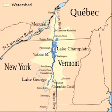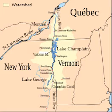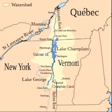The New York portion of the Champlain Valley includes the eastern portions of Clinton County and Essex County. Most of this area is part of the Adirondack Park. There are recreational facilities in the park and along the relatively undeveloped coastline of Lake Champlain.